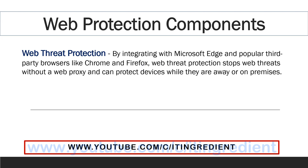The first component of web protection is web threat protection. By integrating with various browsers like Microsoft Edge, Google Chrome, or Firefox, web threat protection can help organizations protect devices from various web threats, irrespective of where the devices are — whether inside or outside the perimeter network, they are protected from web threats.